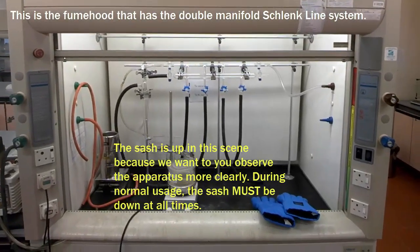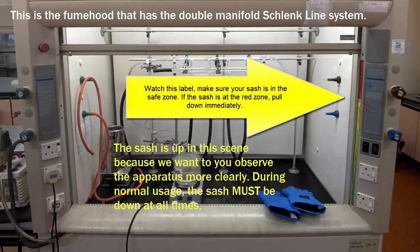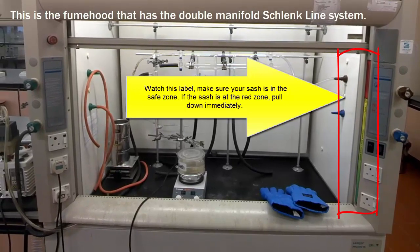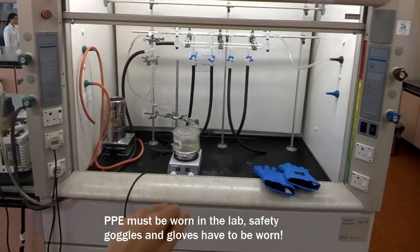We call this the double manifold. What you see right now is a fume hood with the Schlenk line being set up. Before you do anything in the fume hood, make sure you're wearing a pair of gloves and your safety goggles. Of course, the PPE must be ready on you.